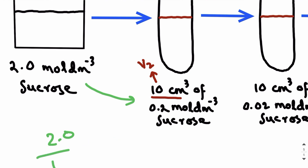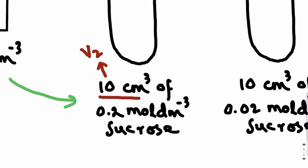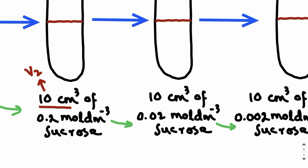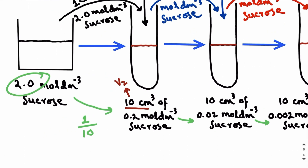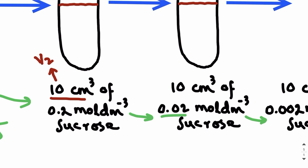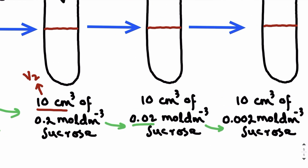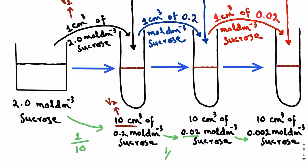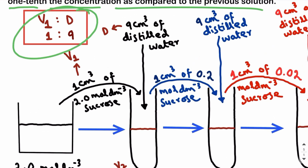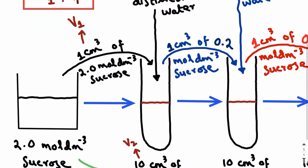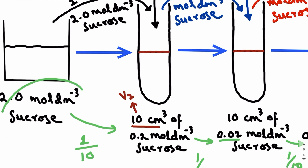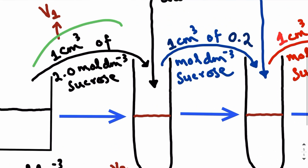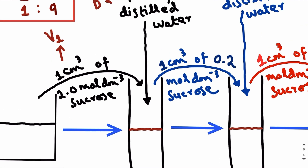At each step the concentration is being reduced 10 times: using 2.0 you prepared 0.2, using 0.2 you prepared 0.02, using 0.02 you prepared 0.002. For that, you need to take v1 and d in a ratio of 1:9. For example, to prepare 10 cm³ of 0.2 mole per dm³ sucrose using 2.0 mole per dm³ sucrose, you take 1 cm³ of the stock solution and 9 cm³ of distilled water.